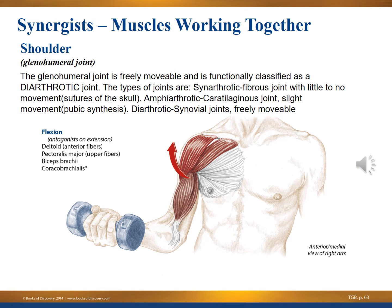Synergists are muscles that work together. We're looking at synergists of the glenohumeral joint — the shoulder joint — for flexion. The glenohumeral joint is a freely movable joint, functionally classified as a diarthrotic joint. Types of joints include: synarthrotic (fibrous, little to no movement, like sutures of the skull), amphiarthrotic (cartilaginous, slight movement, like the pubic symphysis), and diarthrotic (synovial, freely movable) — which is what the shoulder is.